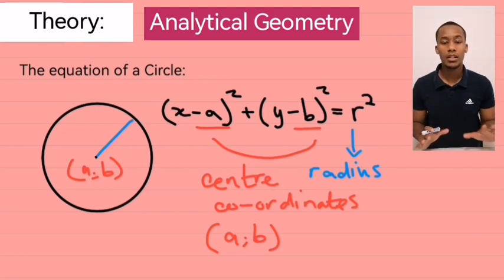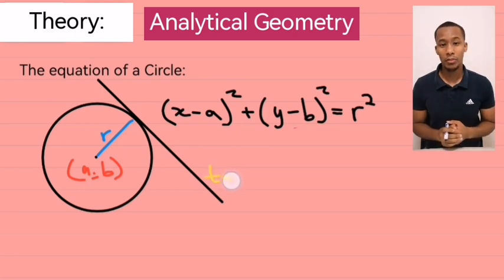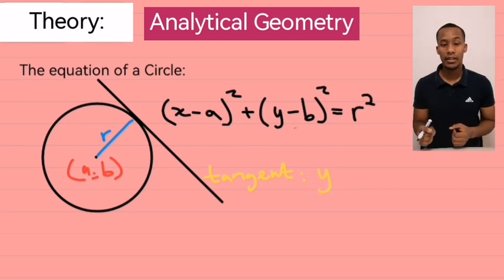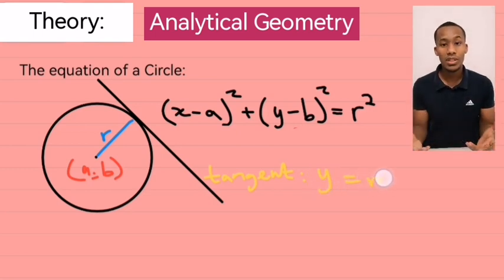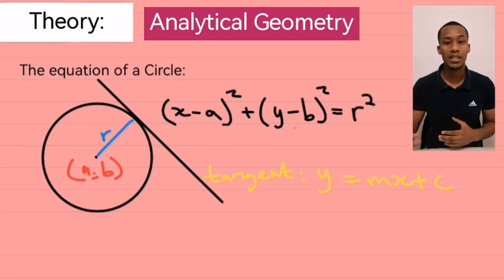Now, have a look at the circle alongside. Now, tangents often appear in analytical geometry as well. So, if we draw a tangent to this circle, note the equation of a tangent would be the same as the equation for a straight line. Because a tangent is also just a straight line. So, it's going to be y equal to mx plus c.